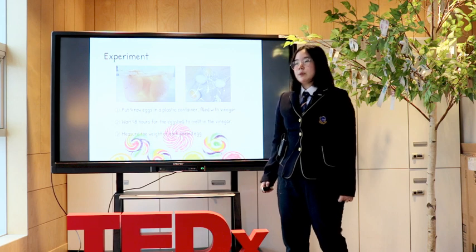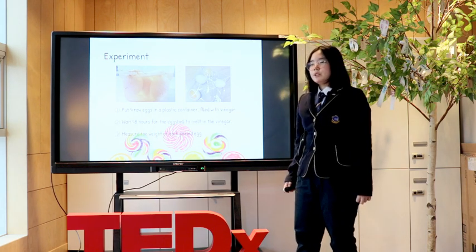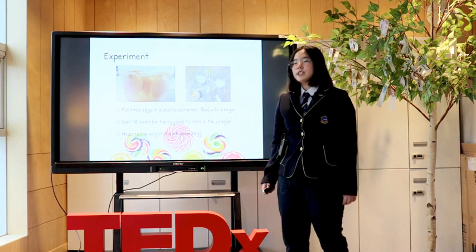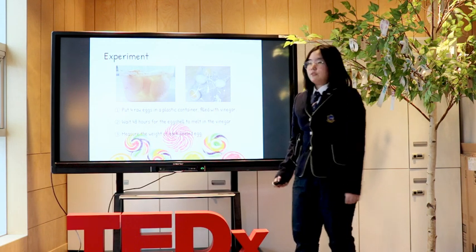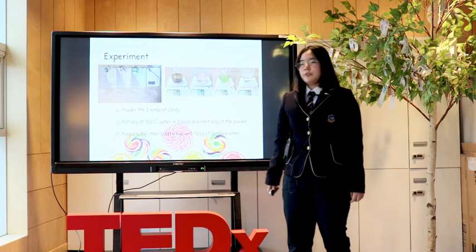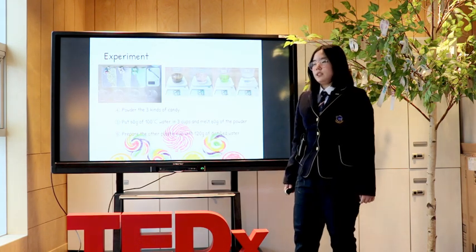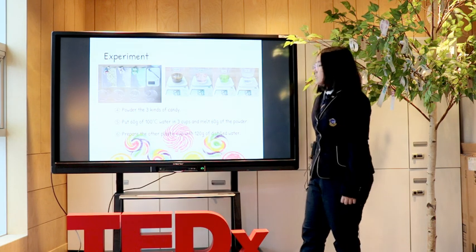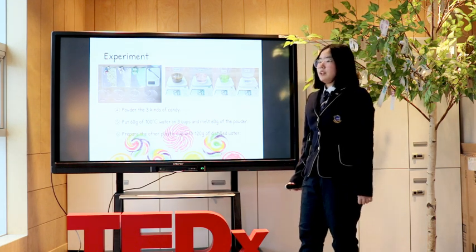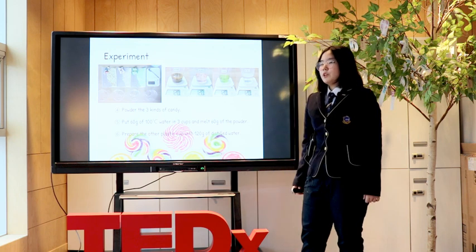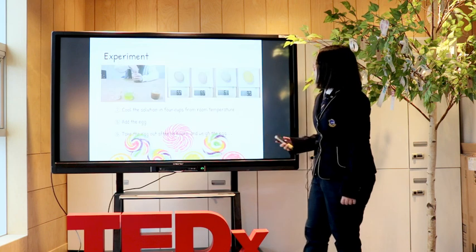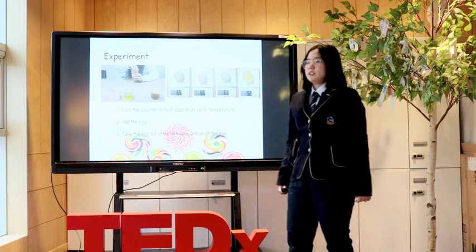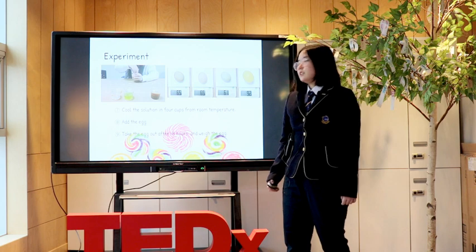For the selectively permeable membrane, an egg's inner shell membrane was used. To peel the outer shell of an egg, I put four raw eggs in a plastic container filled with vinegar and waited 48 hours for the egg shell to melt in the vinegar and peel off. After measuring the weight of each peeled egg, I powdered three different candies. Next, I put 60 grams of 100°C water in three plastic cups and melted 60 grams of each of the three kinds of powdered candy. The other plastic cup was prepared with 120 grams of distilled water. After cooling the solutions in all four cups to room temperature, I added one egg to each cup. After 48 hours, the eggs were taken out and weighed.